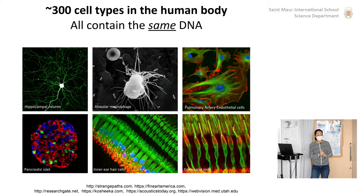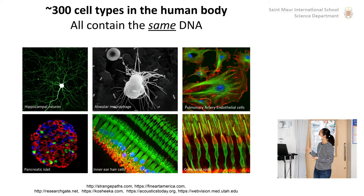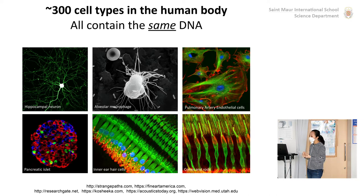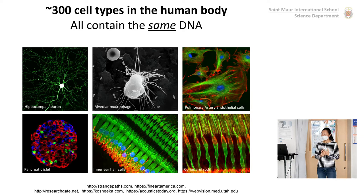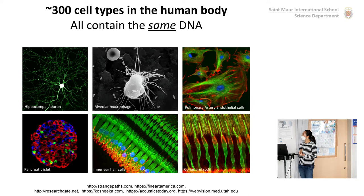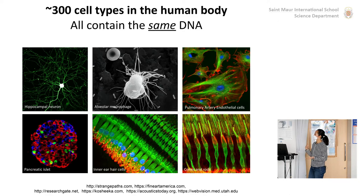What I find personally amazing is that even though cells look so different and function differently, they all have the same DNA inside. With age, they become a little bit different with mutations, but basically every cell in those 37 trillion cells in the body has the same DNA. So how can the same DNA lead to different cell types with different sizes, shapes, and functions?